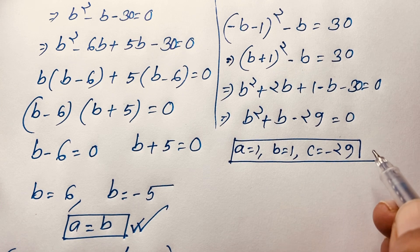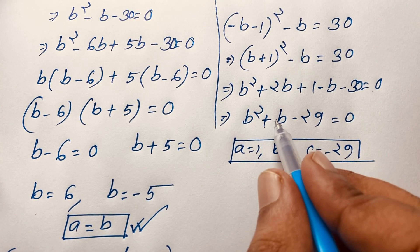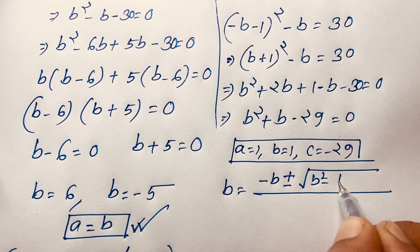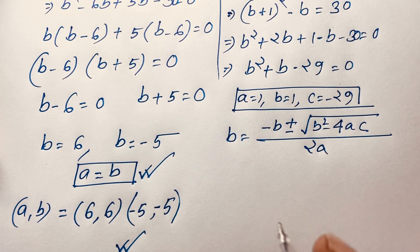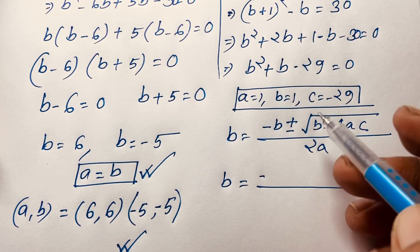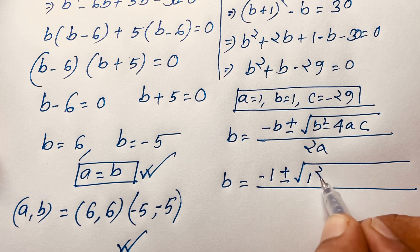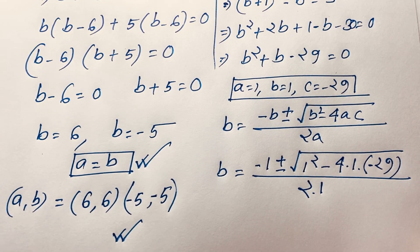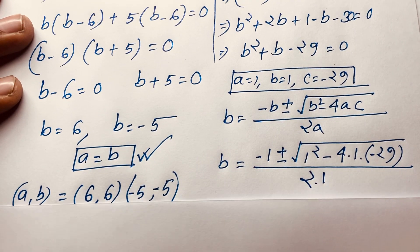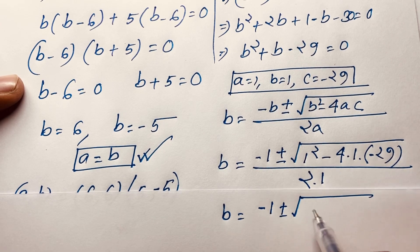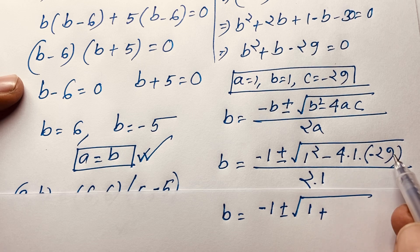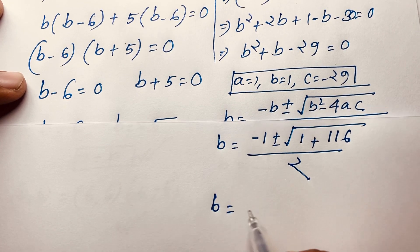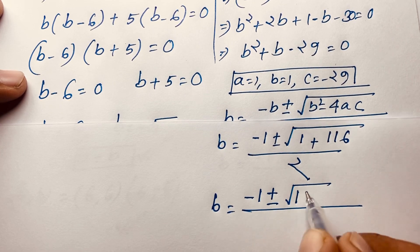Using the quadratic formula: B is equal to negative B plus or minus square root of B squared minus 4AC over 2A. So B is equal to negative 1 plus or minus square root of 1 squared minus 4 times 1 times negative 29, over 2 times 1. That gives B is equal to negative 1 plus or minus square root of 1 plus 116 over 2, which is negative 1 plus or minus square root of 117 over 2.